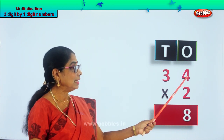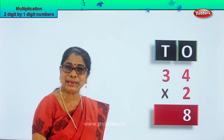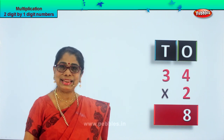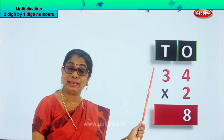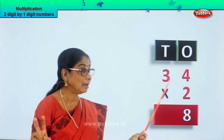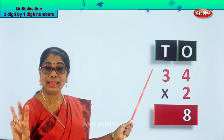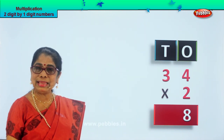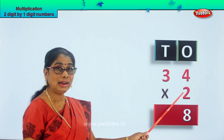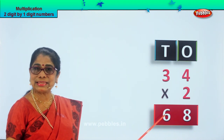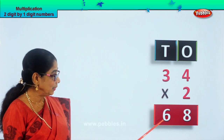Now let us go to the tens place, and we have three here. Three, how many times? Two times. Three plus three — what is three plus three? Six. Three twos are six. Three ones are three, three twos are six. So we write six here.